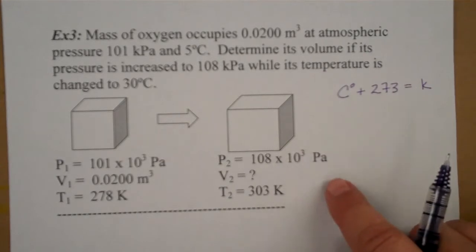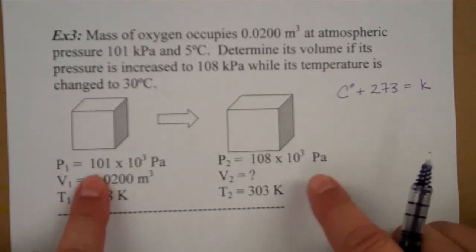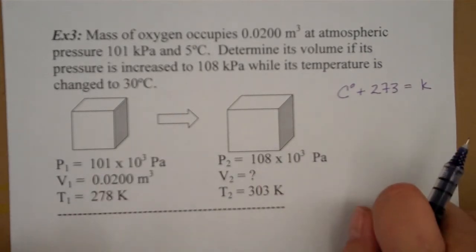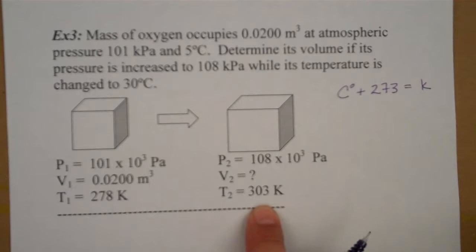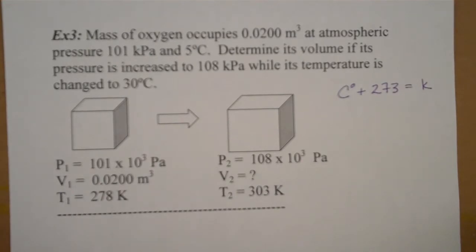And then we're asked if we increase the pressure from 101 to 108 and we change the temperature, making it also a higher temperature. Again we're taking that 30 adding 273 and getting 303. What's the new volume going to be? So we have two changes going on: higher pressure and higher temperature. What's the effect on the volume?